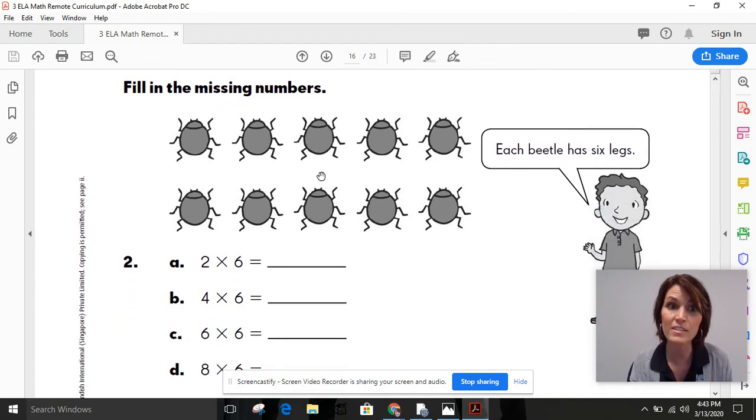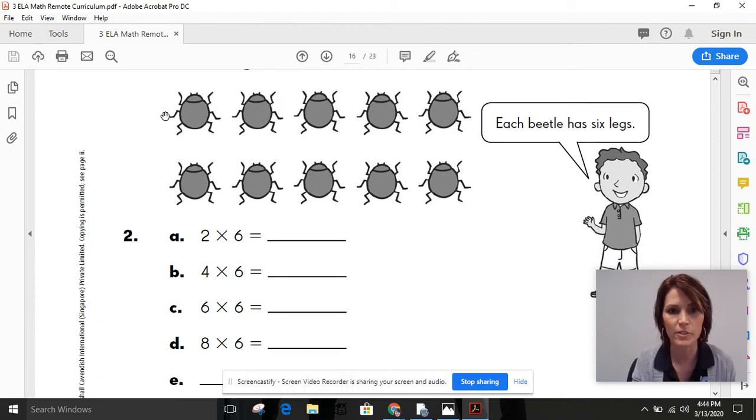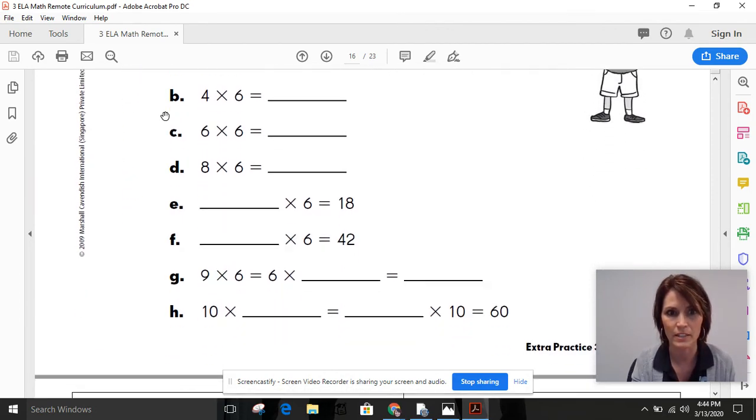Same thing down here. This time, we're looking at the number of legs on a beetle, and each beetle has six legs, so we're going to solve these equations down here. So, two groups of six, so that would be thinking about these two beetles, four groups of six, so thinking about these four beetles. And then you're going to write your answers in the blanks.